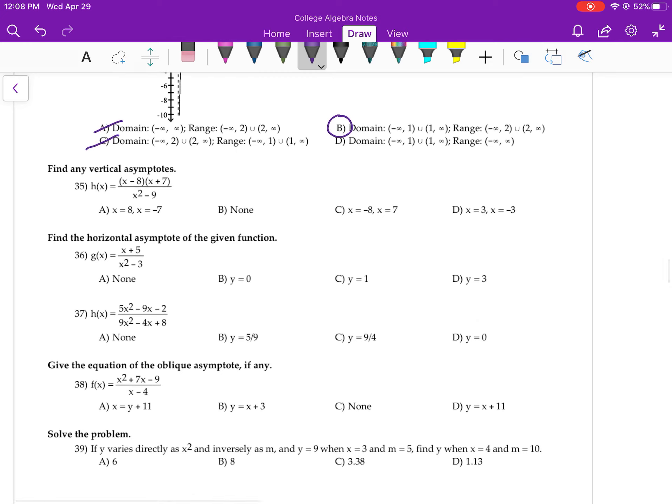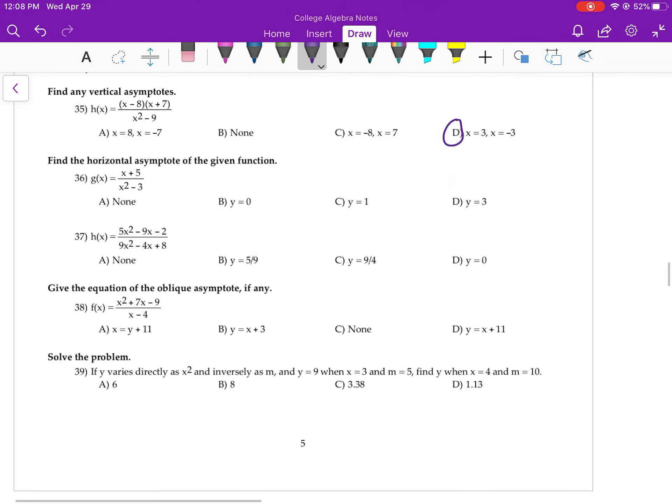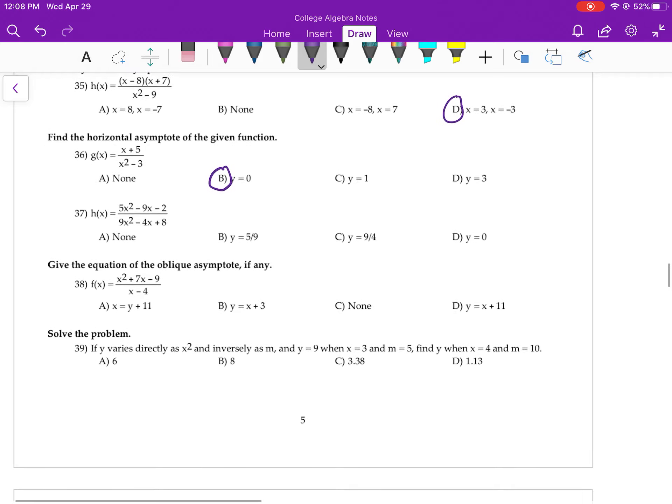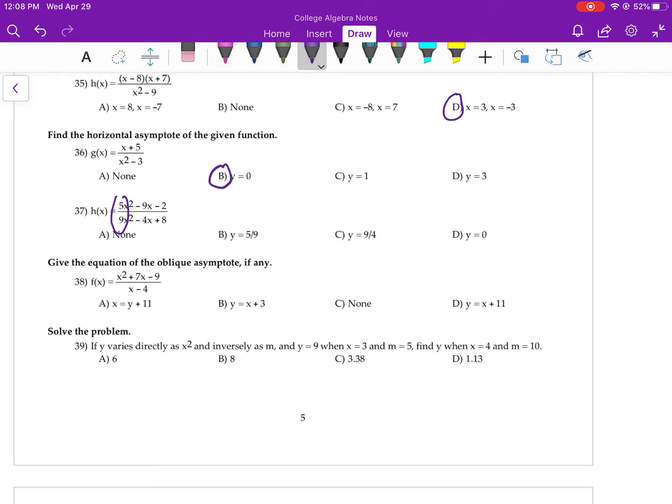Vertical asymptotes come from the denominator. So if you set your denominator equal to 0, you'll have D. Horizontal, when the numerator has a lower degree than the denominator, it's automatically 0. When they're the same, I circle them, and it's 5 ninths.